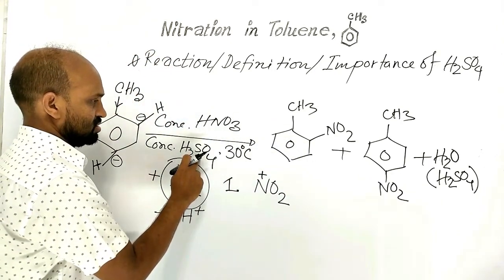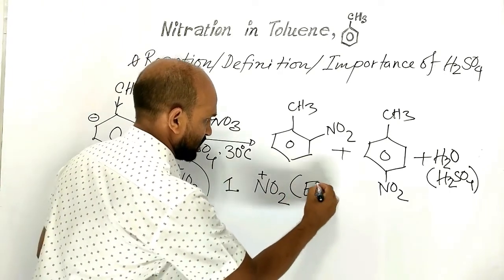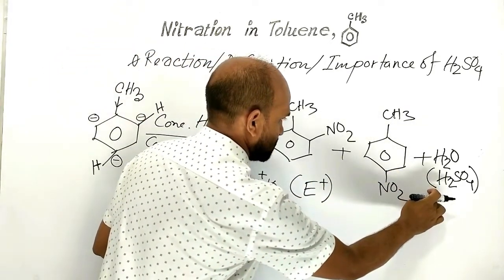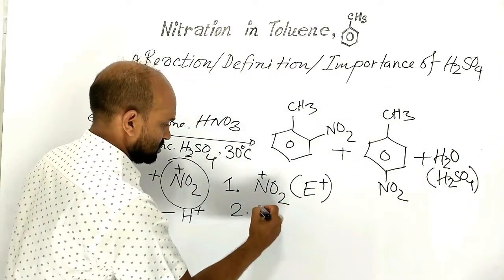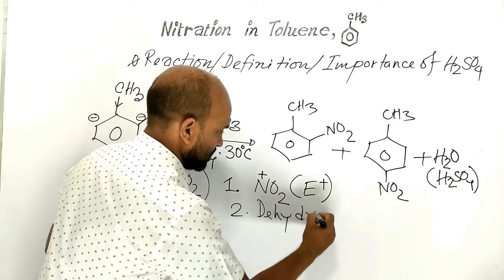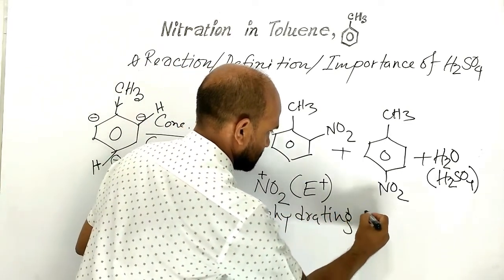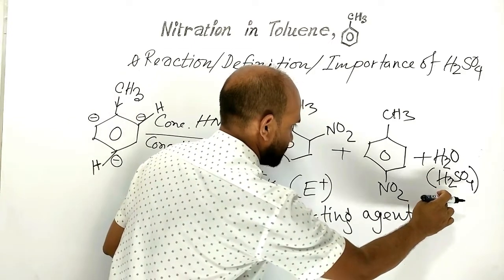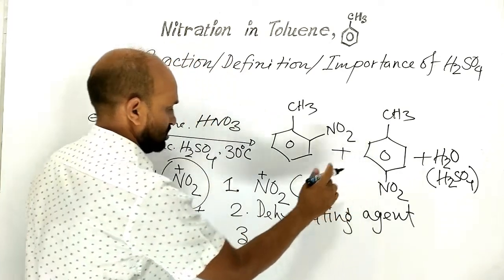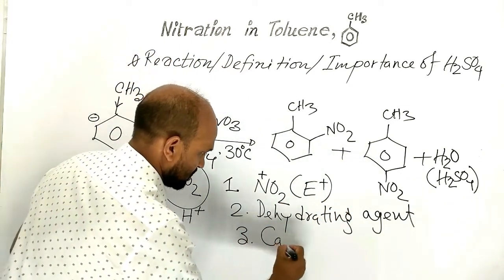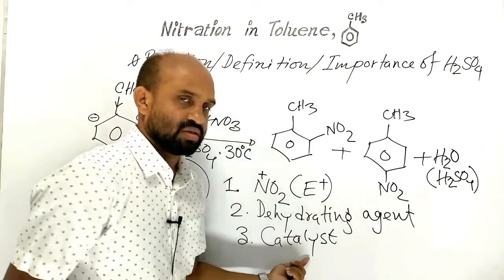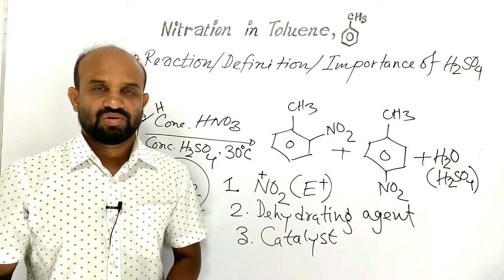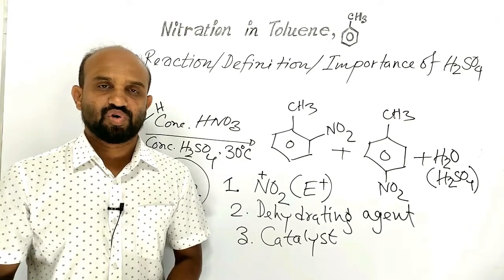Sulfuric acid produces nitronium ion as the electrophile. Number two: sulfuric acid in this reaction absorbs water — that is, sulfuric acid acts as a dehydrating agent. Number three: sulfuric acid remains unchanged after the chemical reaction, meaning it acts as a catalyst. That is why it remains unchanged after the chemical reaction. So in nitration, sulfuric acid is a very important reagent.